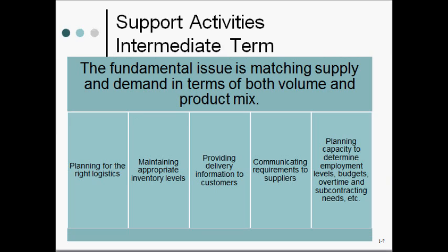Next, the intermediate-term support activities — something which happens on a monthly basis, within a year. The fundamental aspect we have to focus on is how do we match the supply with demand — the supply of products we have to manufacture and the demand that customers are placing. It's not just the number of products we have to make, but we also have to be cognizant of the product mix, because customers might be looking at different configurations of a product. We have to understand the right mix and right volume based on our existing capacity and the demand.